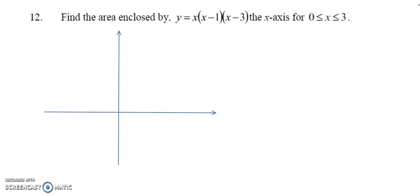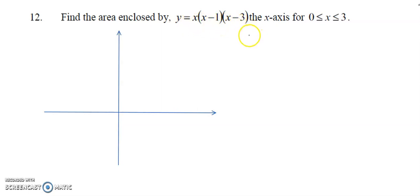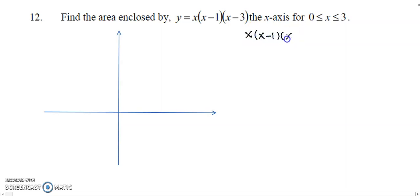Here we look at this question, which involves a cubic function: y equals x(x minus 1)(x minus 3). We want to get the area enclosed by this curve and the x-axis from 0 to 3. To sketch the curve, we first get the roots by setting y equals 0 and solving the factorized form, giving us three roots: x equals 0, x equals 1, and x equals 3.